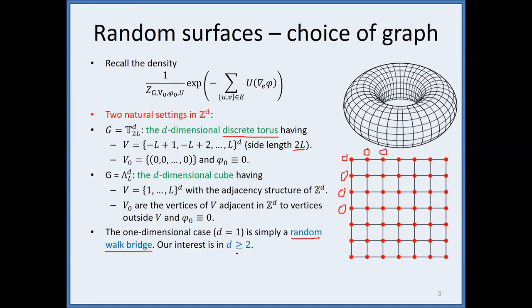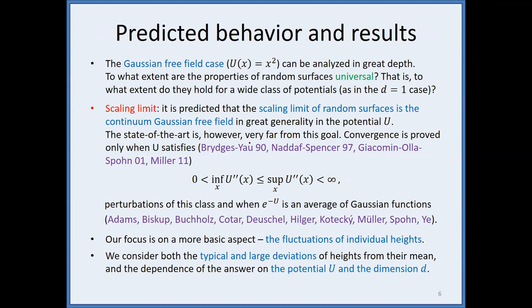The Gaussian free field can be analyzed in great depth since it is Gaussian, but from random walks we know that properties are universal: you always get Brownian motion as the scaling limit and fluctuations of order sqrt(n) regardless of the density. I would like to understand the dependence of the behavior of a random surface on the potential U, and to show that properties do not depend on U — this is the idea of universality.